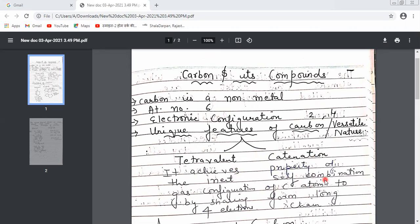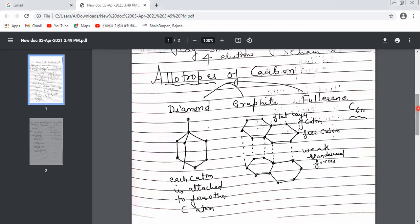These are the two unique features of carbon. Next topic is allotropes of carbon. What are allotropes? The various physical forms in which an element can exist are known as allotropes. Carbon has basically three allotropes: diamond, graphite, and fullerene.